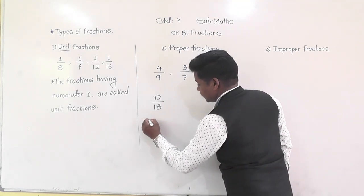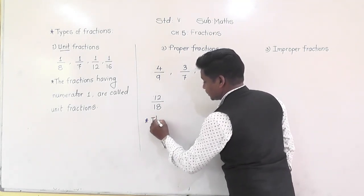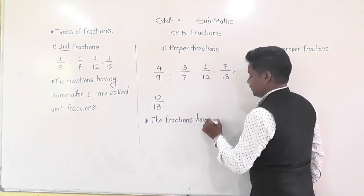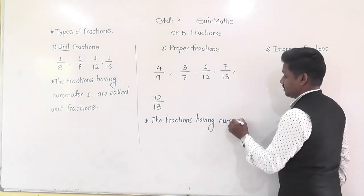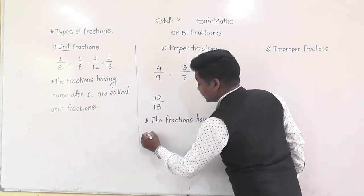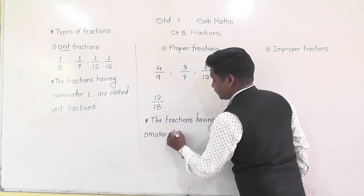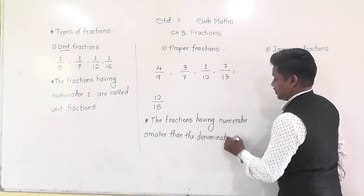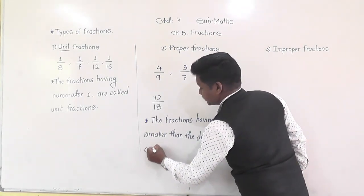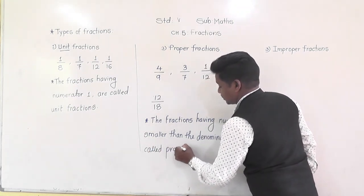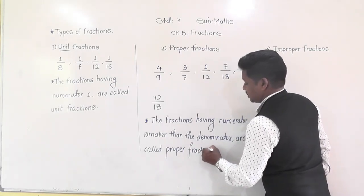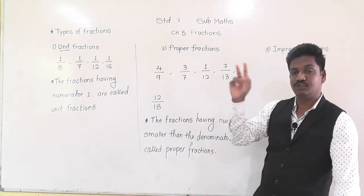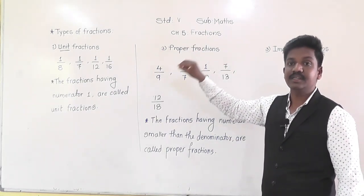The fractions having numerator smaller than the denominator are called proper fractions. In proper and improper fractions, there is a comparison of numerator and denominator. When numerator is smaller than the denominator, it is called a proper fraction. Whereas the opposite of this — if the denominator is smaller than the numerator, or numerator is greater than the denominator — that is an improper fraction.